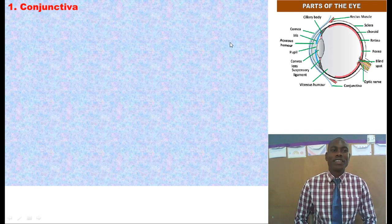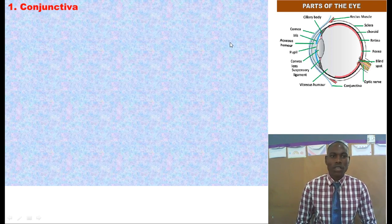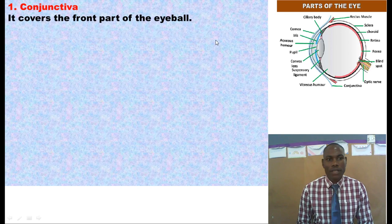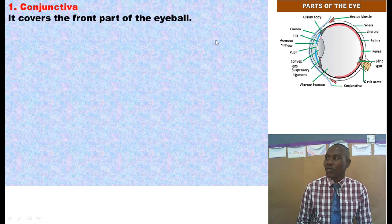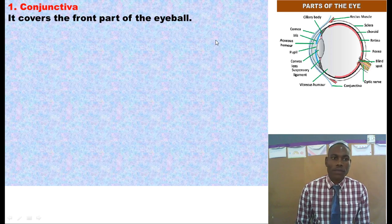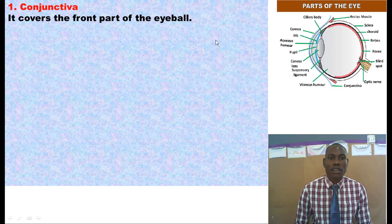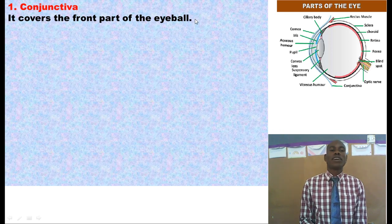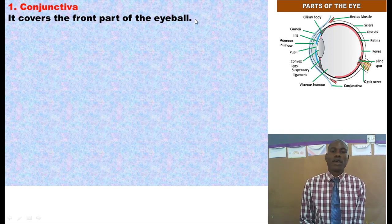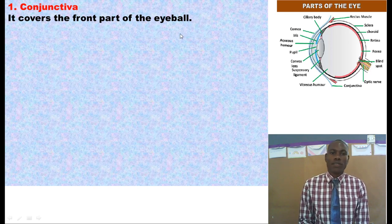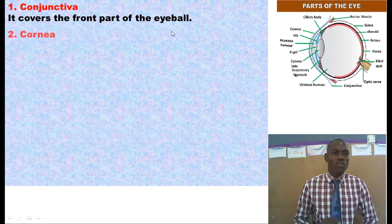The first part we are starting with is the conjunctiva. The conjunctiva is a membrane that covers the front part of the eyeball. It also covers the inner eyelids from their inside — that is the main role of the conjunctiva. What do you need to know again about the conjunctiva? The conjunctiva is supposed to be lubricated all the time, and what lubricates it is tears. Those tears are produced by the tear glands.